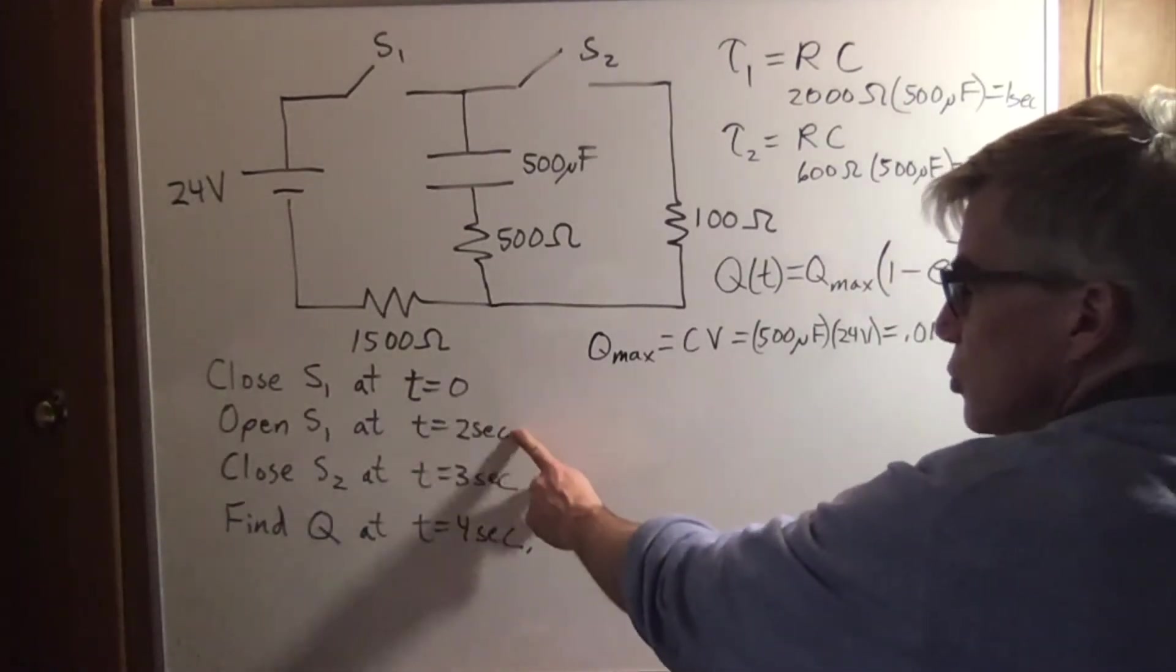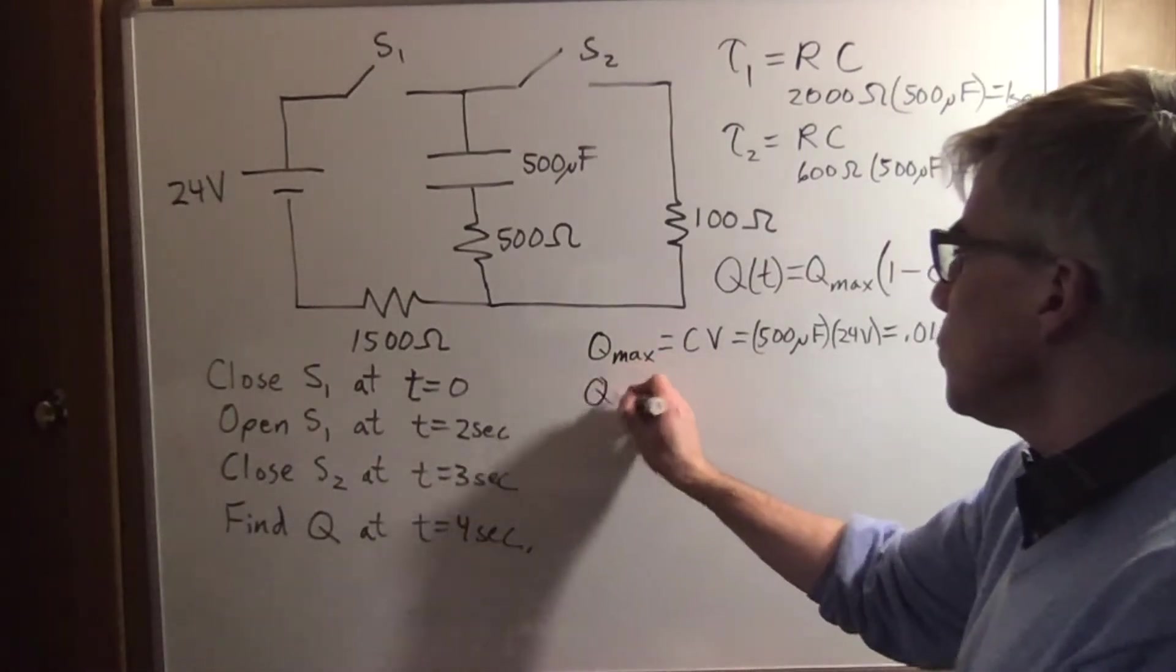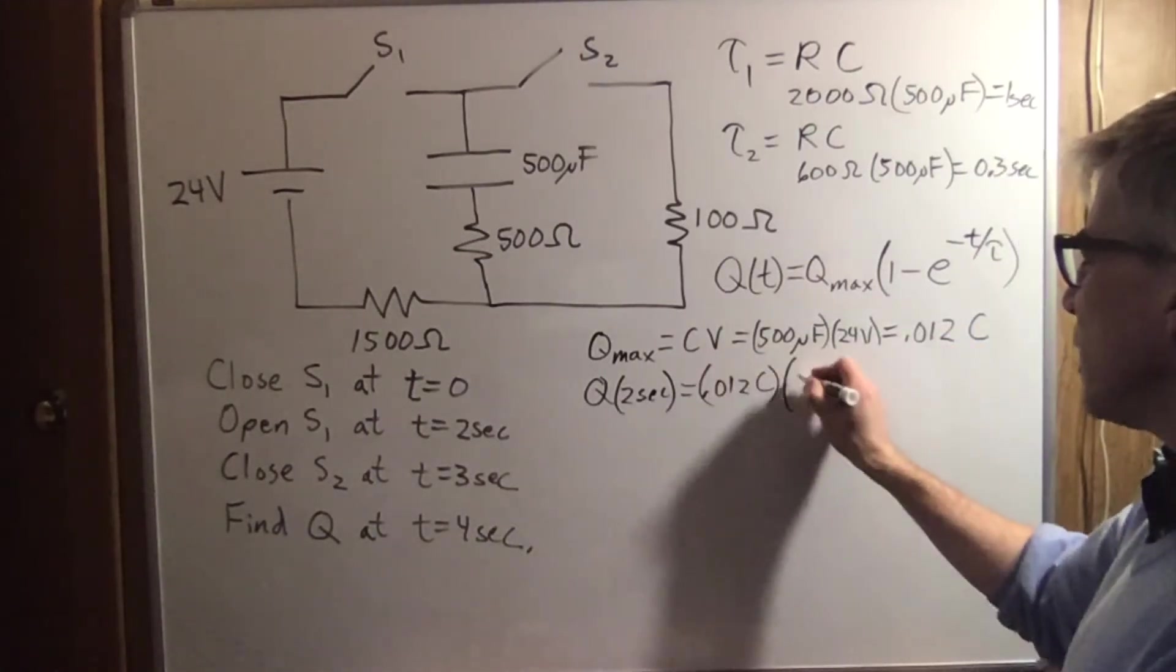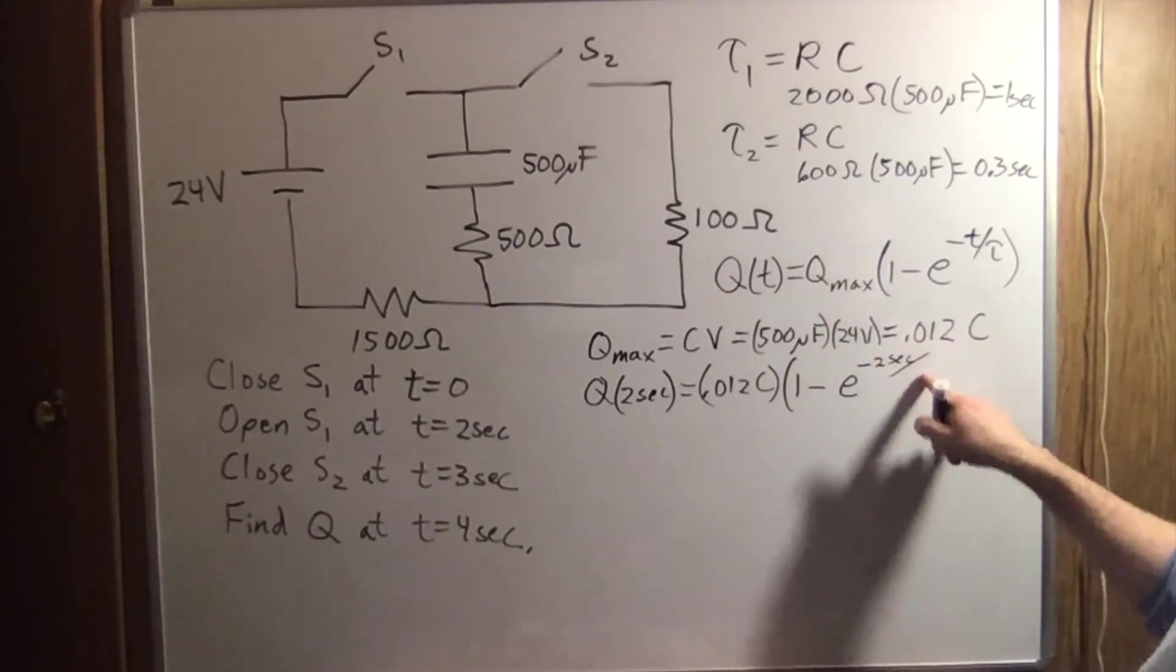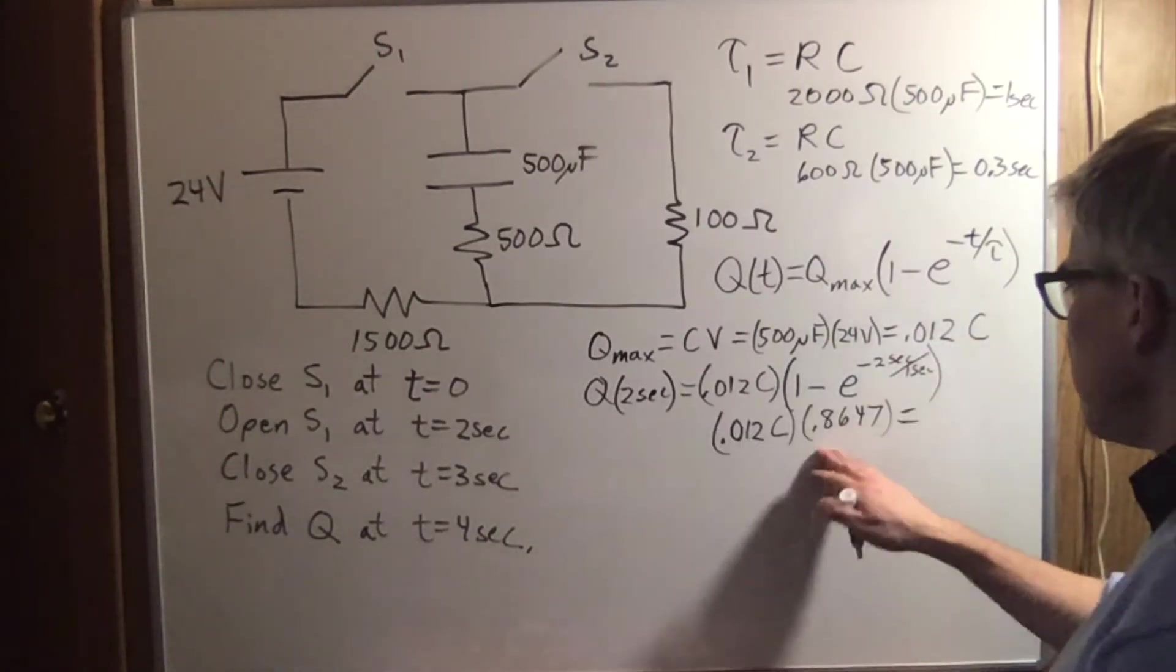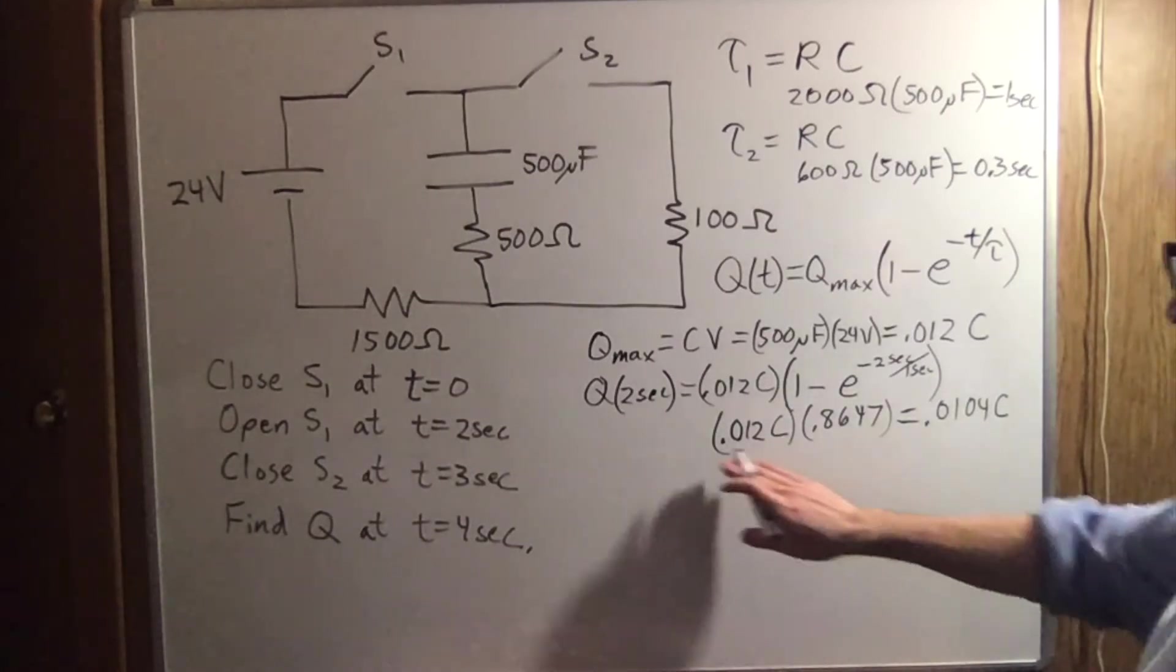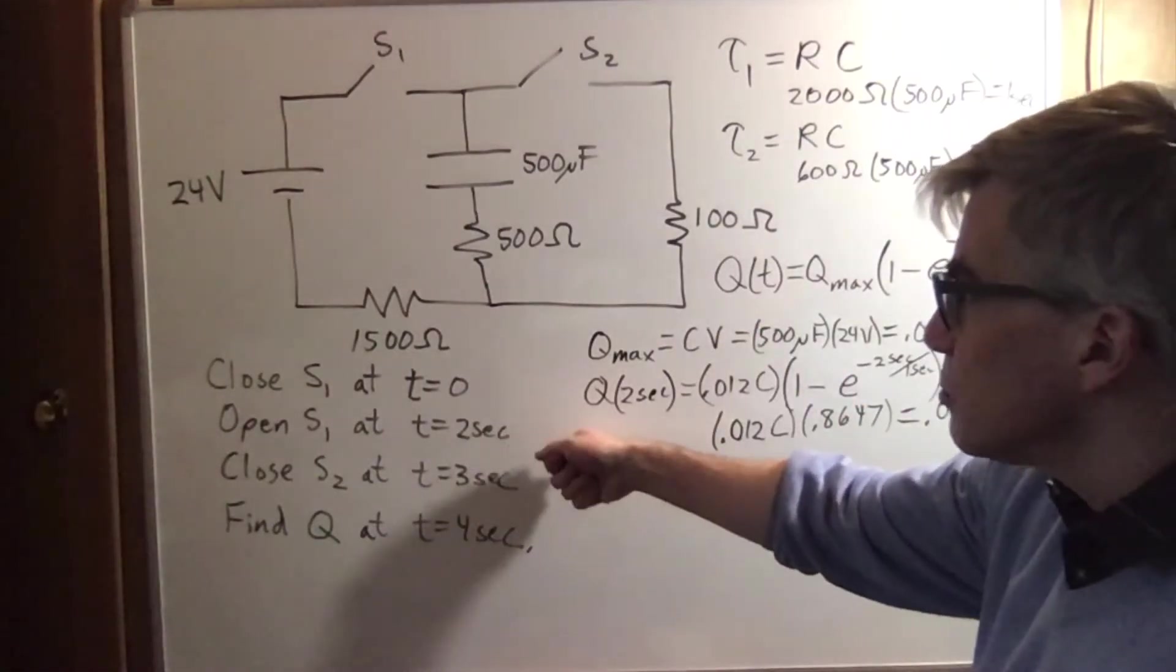We're only going to let it charge for two seconds and then we're going to stop it. So the q at two seconds is going to be the q max 0.012 coulombs times one minus e to the negative two seconds divided by the tau. We worked out the tau is one second. 0.8647 times 0.012 and we get 0.0104 coulombs. That's how much charge it has on the capacitor. That's what happens at two seconds when we open switch one.